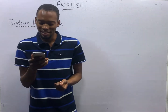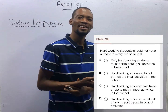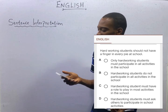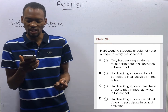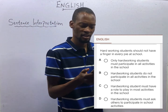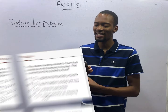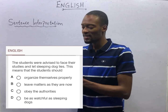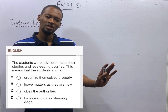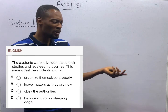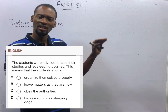Next question: 'Hard working students should not have a finger in every pie at school.' That means hard working students do not participate in all activities in the school. That is the meaning of 'having your finger in every pie.' The students were advised to face their studies and let sleeping dogs lie. To let sleeping dogs lie means to leave matters as they are now — don't bring up matters where there is no issue, don't raise issues already discussed, let issues go.